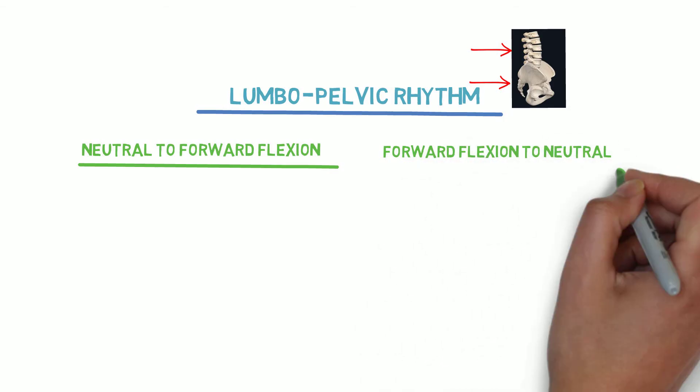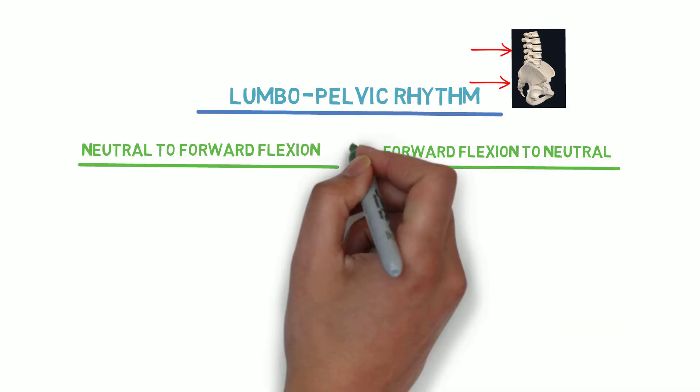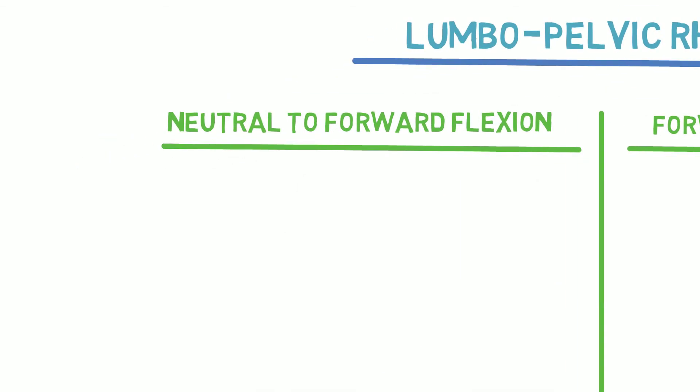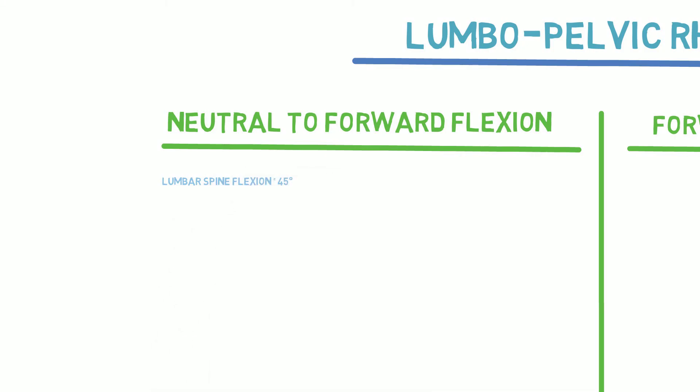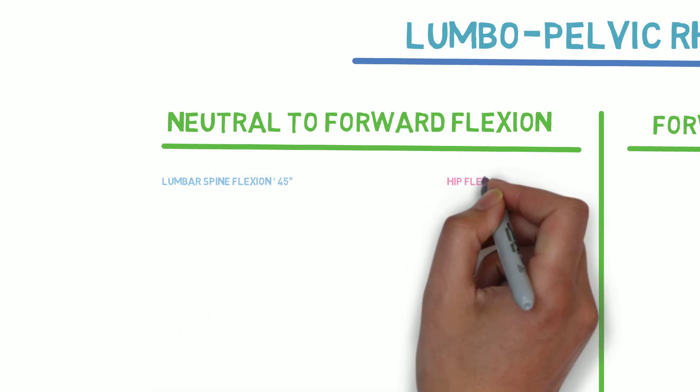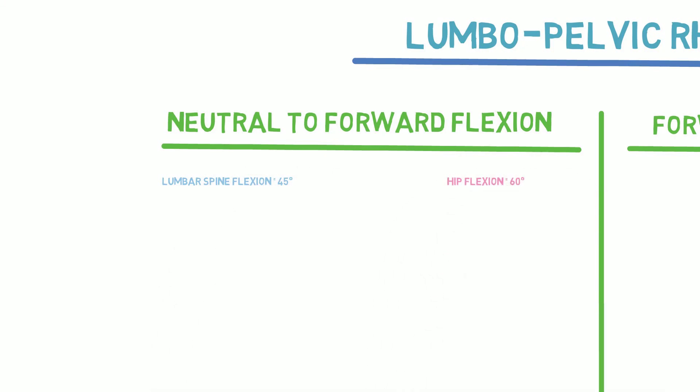Let's take a look at neutral to forward flexion first. The total range of motion for forward bending is about 45 degrees from the lumbar spine and about 60 degrees from the hips.